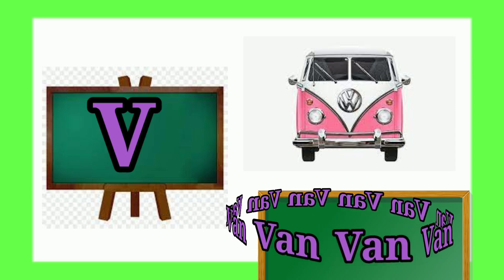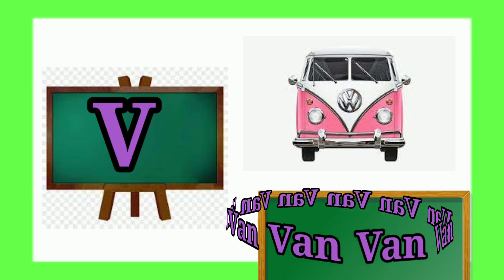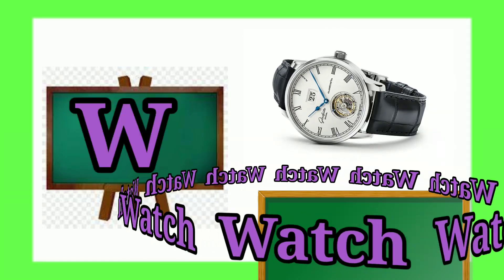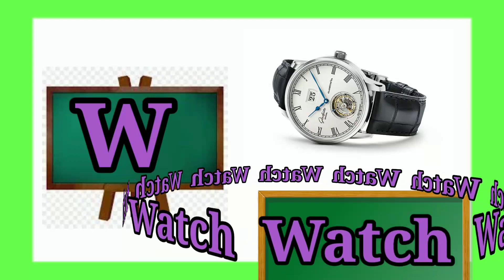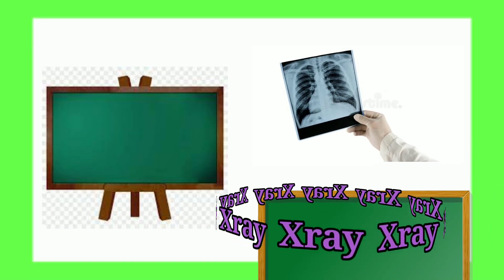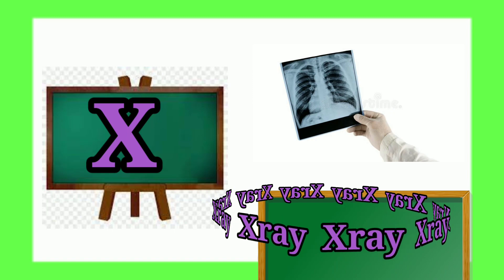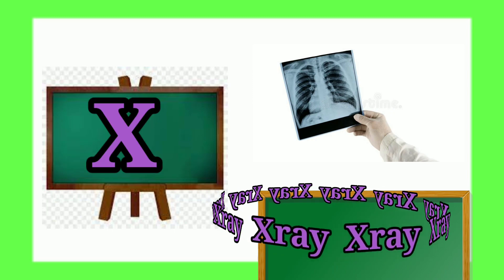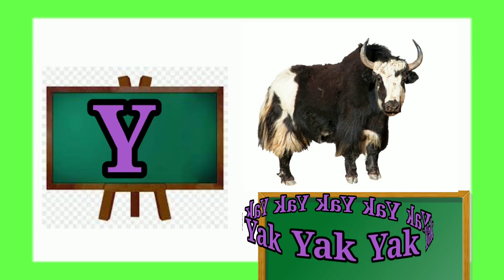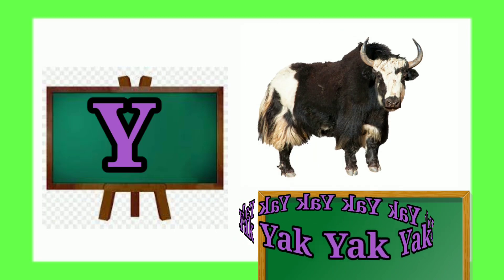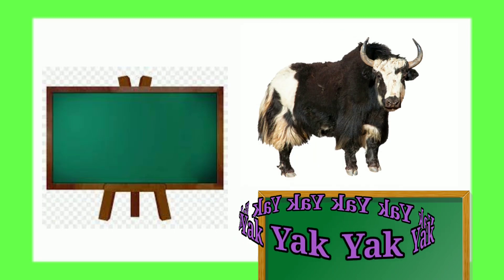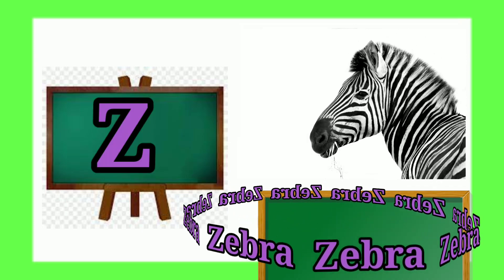V for web, W for horse, X for axe cream, Y for yard, Z for zebra.